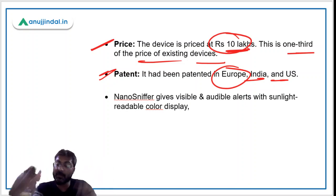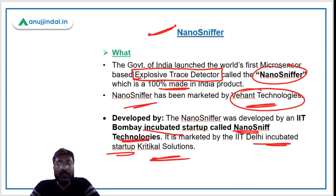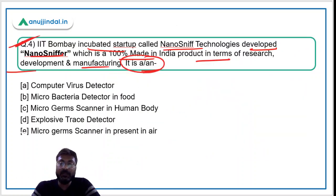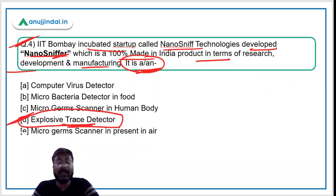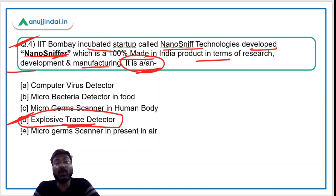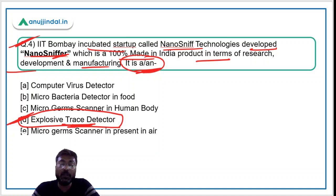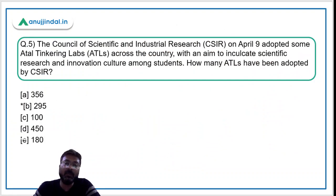So to summarize, the Nano Sniffer is an explosive trace detector that can trace explosives within just 10 seconds, developed by the IIT Bombay-based startup Nano Sniff Technologies. The correct answer is option D.